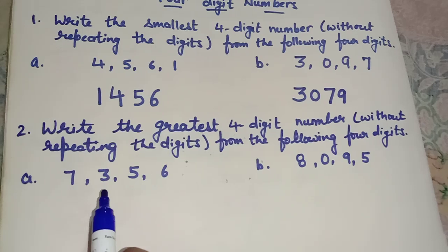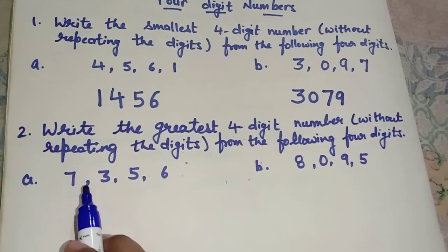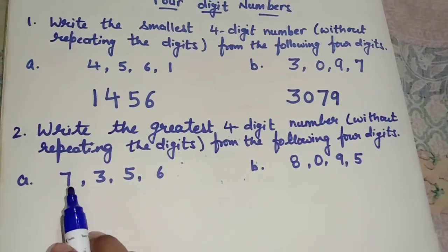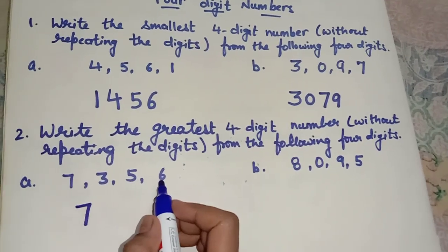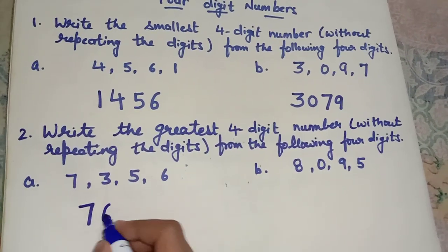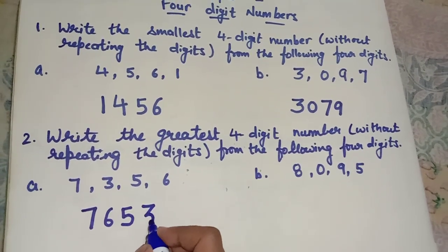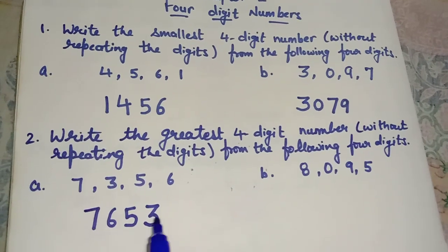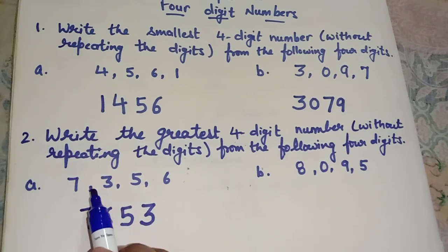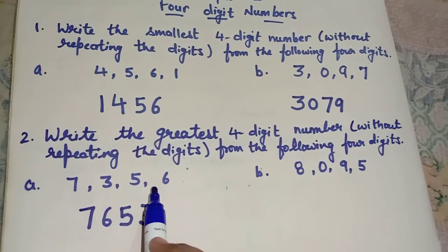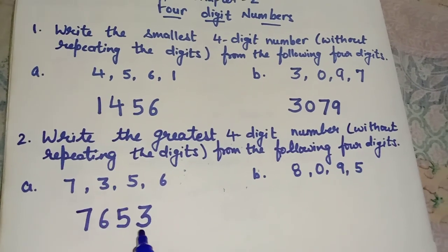So first we will write the greatest number and in the end we will write the smallest number. Find out which number is greatest — 7 is the greatest. Then we write 7, then 6, then 5, and in the end we write the smallest number, which is 3. So here we have the number 7,653. Using these 4 digits, we made the greatest 4-digit number without repeating any digit.